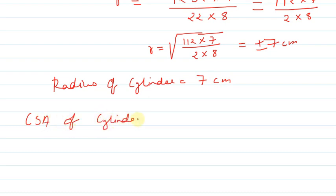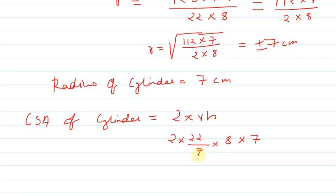Now we have to find the curved surface area. The curved surface area is two pi r h, so two times 22 by 7, radius is 7 and height is 8. On simplifying this, we get 22 times 16, which is equal to 352 centimeter square.